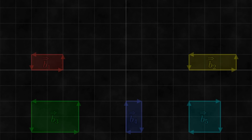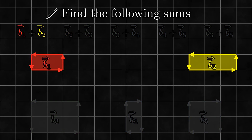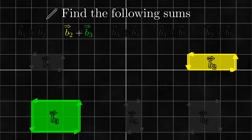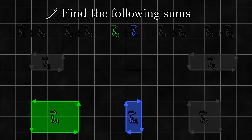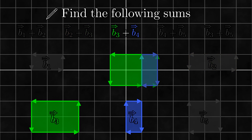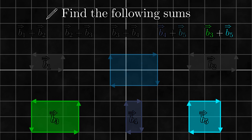Let's do an exercise. Here are several bivectors. Please find the following sums — the exact shape of your answers doesn't really matter, the important thing is that the magnitude and orientation are the same. The first sum: both have the same orientation, so sticking them together produces a counterclockwise bivector with a magnitude of 5. The next produces a counterclockwise bivector with a magnitude of 9. The third has opposite orientations, removing overlap creates a counterclockwise bivector with magnitude 4. The fourth produces a clockwise bivector with magnitude 6. The last produces a counterclockwise bivector with magnitude 2.